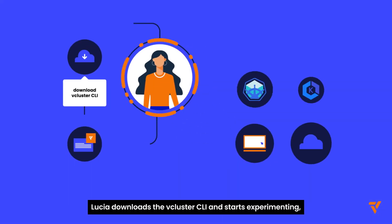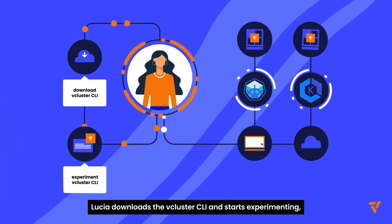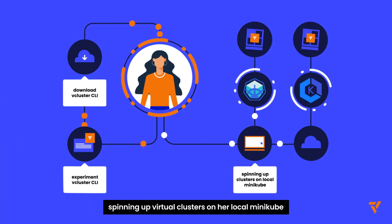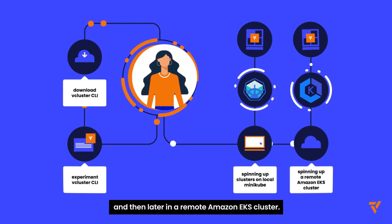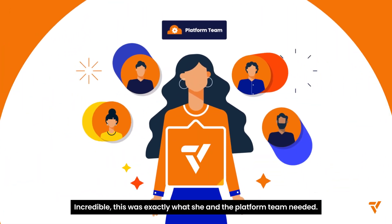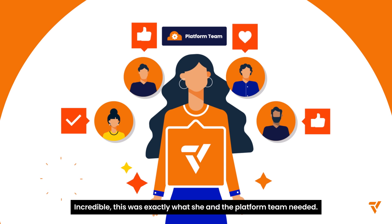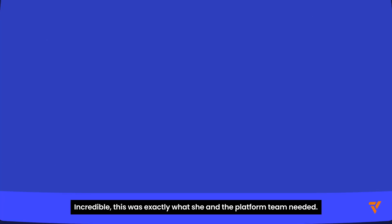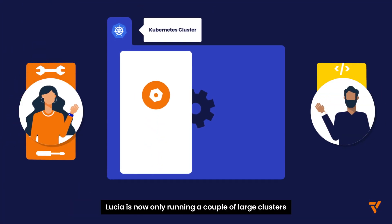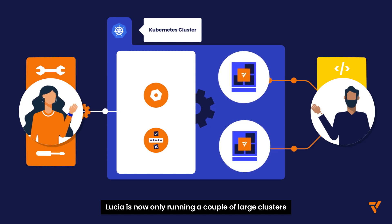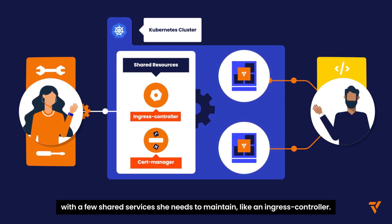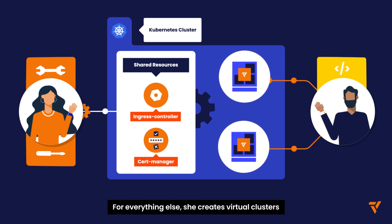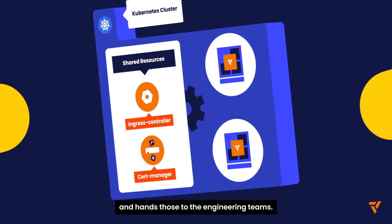Lucia downloads the Vcluster CLI and starts experimenting, spinning up virtual clusters on her local minikube, and then later in a remote Amazon EKS cluster. Incredible — this was exactly what she and the platform team needed. Lucia is now only running a couple of large clusters, with a few shared services she needs to maintain, like an ingress controller. For everything else, she creates virtual clusters and hands those to the engineering teams.